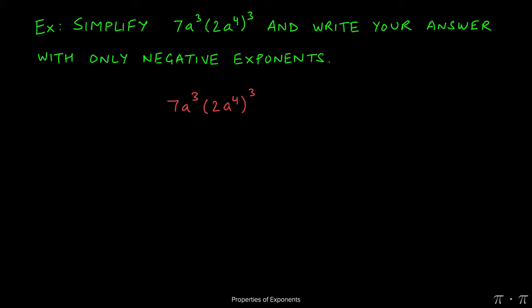So we start by rewriting the problem and then recognize that nothing by itself can be simplified, especially within the parentheses. The 2a to the fourth, none of these terms can be multiplied together.